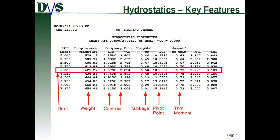Notice that the sinkage rate changes a little depending on your draft, so it only really works for small changes. If you're looking at large changes in weight or draft, just add it into GHS directly — because GHS considers how this number changes as draft increases. For trimming questions, you first need to know your pivot point, which is your LCF. The LCF also moves a little as draft changes, so again, for big changes in trim, let GHS do the calculations.